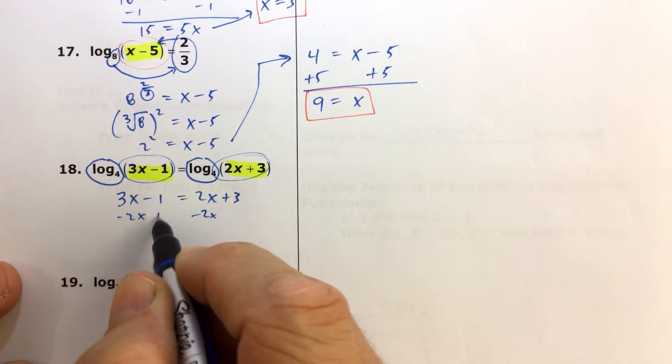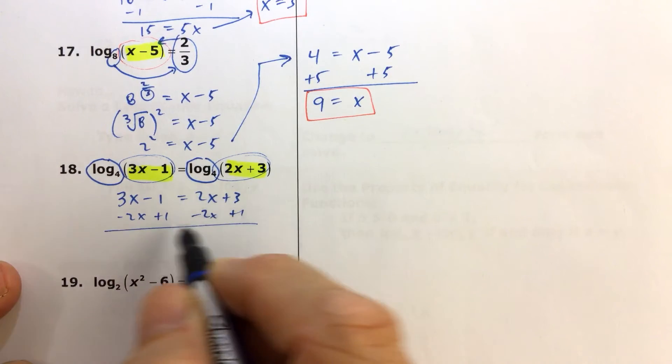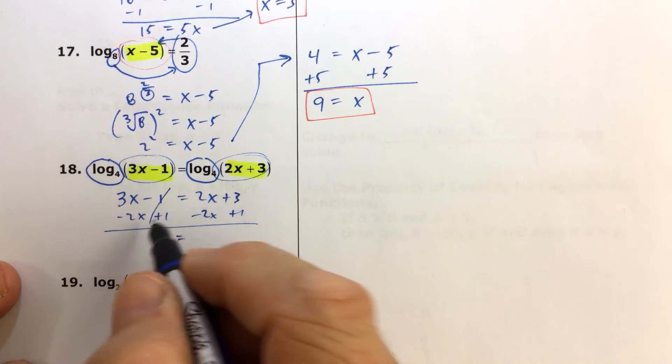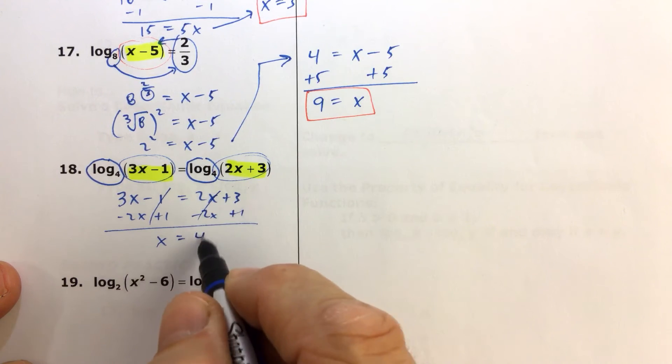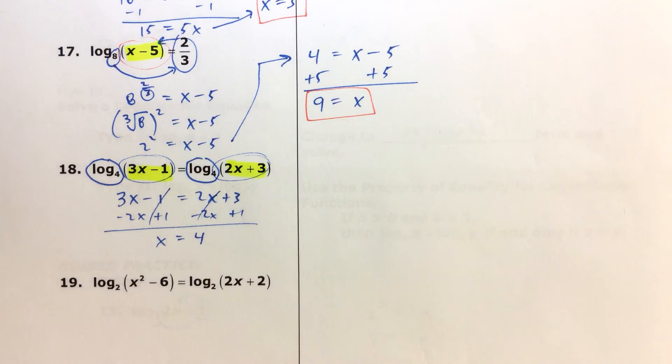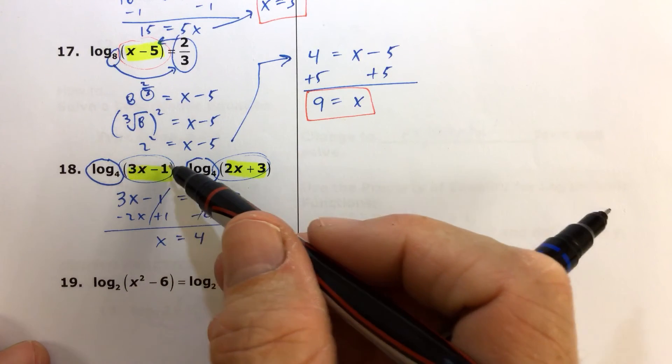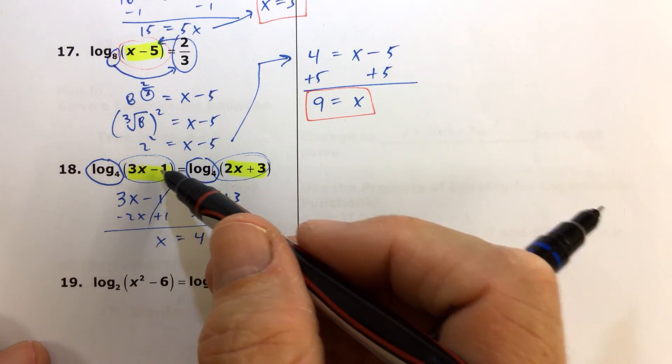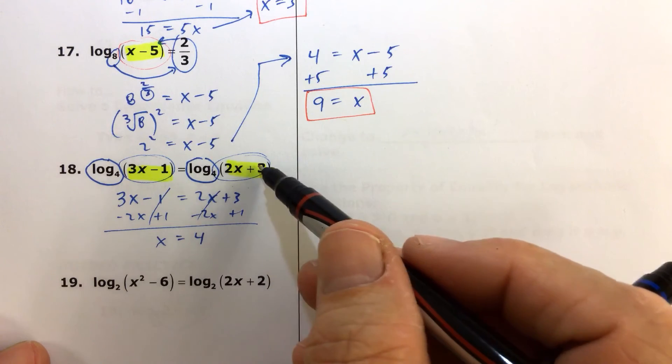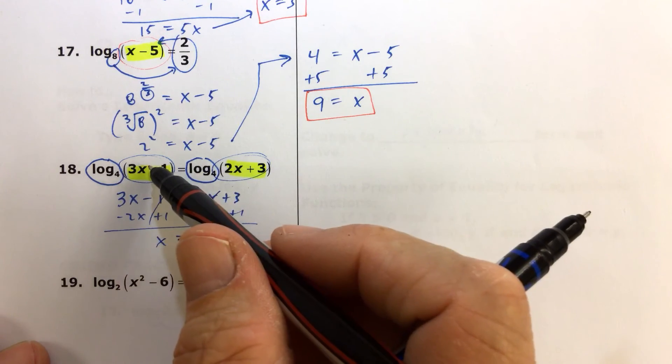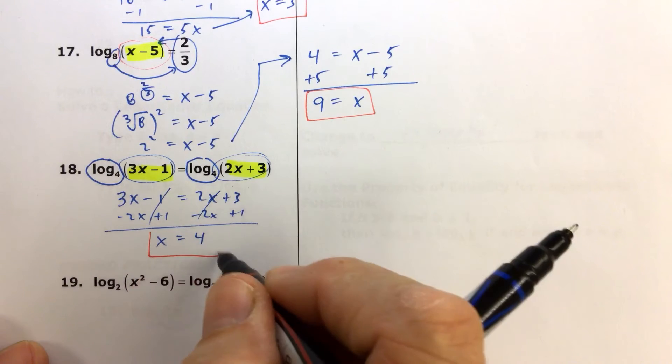So 3x minus 1 equals 2x plus 3. When we subtract 2x from both sides, as well as add 1 to both sides, we get x on the left, because the 1's cancel there. 2x's on the right cancel, we get 3 plus 1, 4. And when we check that, 3 times 4 minus 1, that's 12 minus 1 is 11, that's a positive number. And 2 times 4 is 8, 8 plus 3 is 11, so the log base 4 of 11 equals the log base 4 of 11.